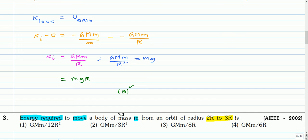This is the next question. Energy required to move a body of mass m from an orbit of radius 2r to 3r. You can pause and attempt this question.